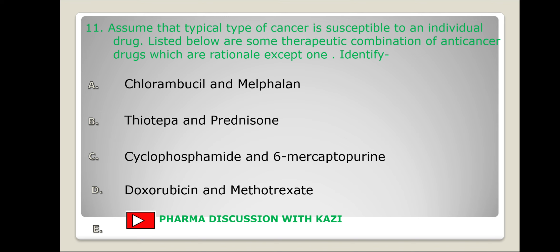In the second case, thiotepa acts as an alkylating agent and prednisone as a glucocorticoid. In the third case, cyclophosphamide acts as an alkylating agent and 6-mercaptopurine is used as a purine antagonist. In the fourth case, doxorubicin acts as an antibiotic and methotrexate as a folate antagonist. So the correct answer is A — chlorambucil and melphalan.